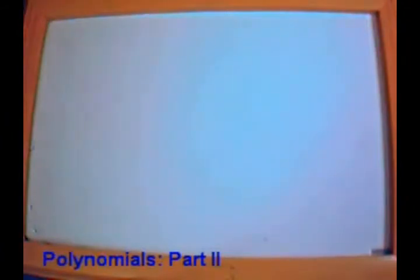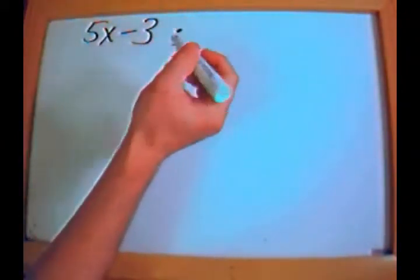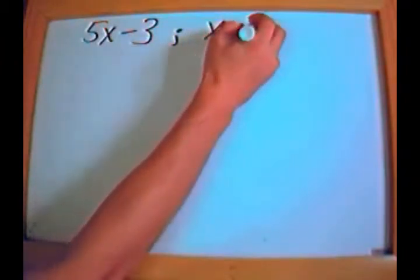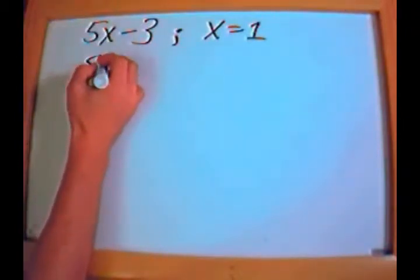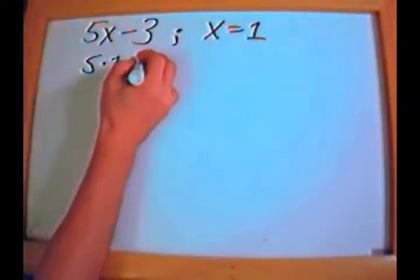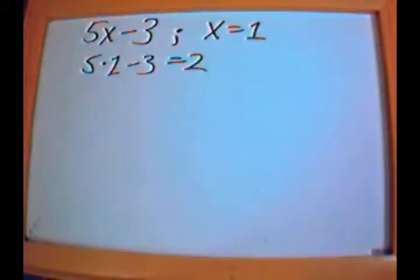Now we're going to continue with polynomials and talk about functional notation. This is going to look a little different, but in the end it's no different than anything we've been working on. What if I gave you something like 5x minus 3 and asked what is the value of this expression when x equals 1? All you would do is plug 1 in: 5 times 1 minus 3 equals 2.